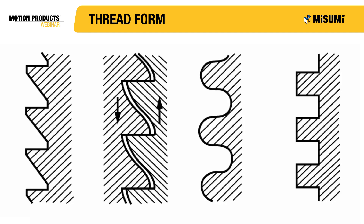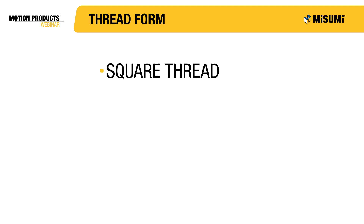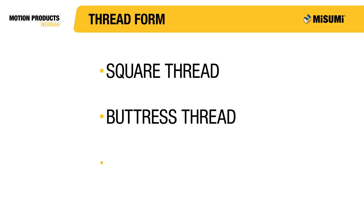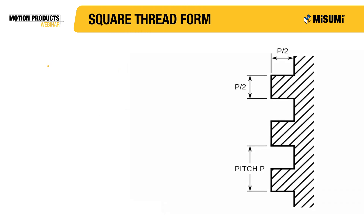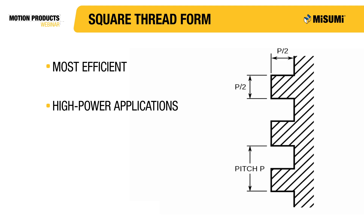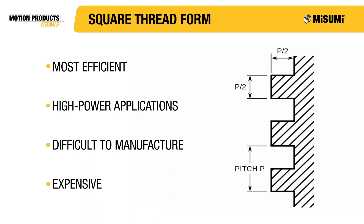These include, but may not be limited to, square thread, buttress thread, and trapezoidal threads. Square threads are the most efficient thread form, as they have the least amount of friction. As a result, the square form is often used in high-power applications. The drawback of the square form is that it is the most difficult form to manufacture, thereby making it the most expensive.